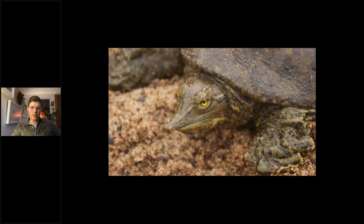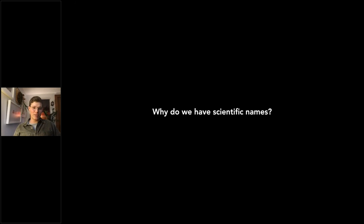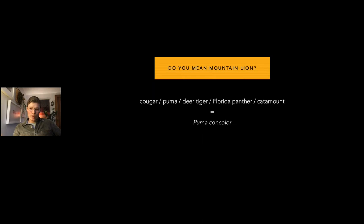Today we're going to talk about scientific names and what we can learn from them. 'Scientific name detective' is a game I like to play when guiding, where a guest picks an animal and we look up the scientific name to figure out what it can teach us about that animal's natural history. Why do we even have them? If I say mountain lion, Florida panther, catamount, puma, deer tiger, or cougar, all of those are different common names for one species — Puma concolor, the mountain lion.